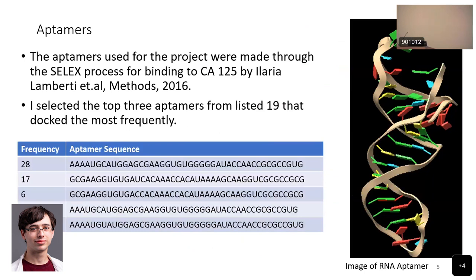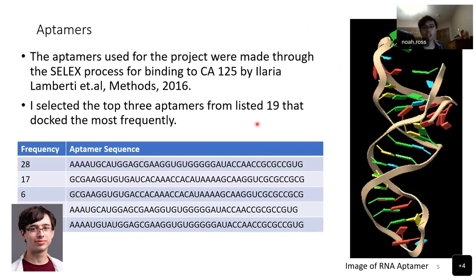The aptamers I used for this project were made through the SELEX process for binding to CA-125 by Hilario Lamberti et al. I selected the top three aptamers from the listed 19 that docked the most frequently. On the right, you can see the aptamers that docked the most times, and in the center, you can see the sequence of the top aptamers along with the frequency of how many times they docked to CA-125.